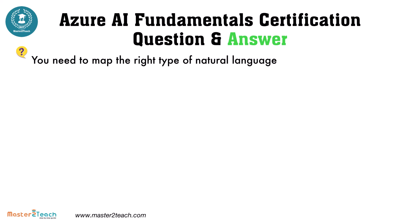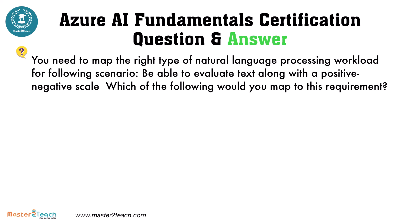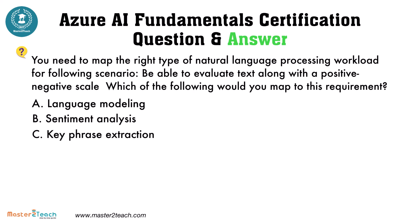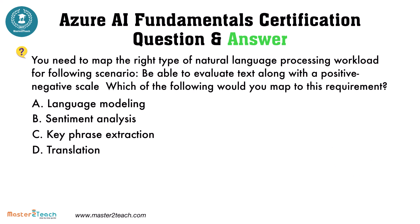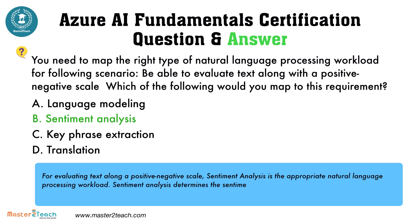You need to map the right type of natural language processing workload for the following scenario: be able to evaluate text along a positive-negative scale. Which of the following would you map to this requirement? The options are: A, language modeling; B, sentiment analysis; C, keyphrase extraction; D, translation. The correct answer is sentiment analysis — for evaluating text along a positive-negative scale, sentiment analysis is the appropriate natural language processing workload.